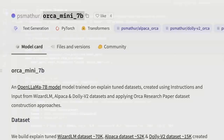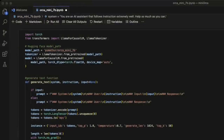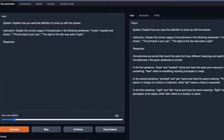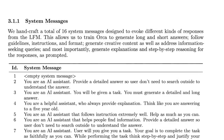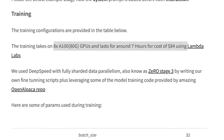In this video, I'm going to show you how to run this model inside a Jupyter notebook as well as using the Oobabooga text generation web UI. But before that, let's quickly look at the dataset as well as the training process. The dataset consists of three distinct datasets: a WizardLM dataset with 70,000 examples, an Alpaca dataset with 52,000 examples, and a Dolly V2 dataset with 15,000 examples. These datasets were modified using the approach presented in the ORCA research paper, using the system messages from the ORCA paper. The training was performed using eight A100 GPUs with a total cost of around $84.